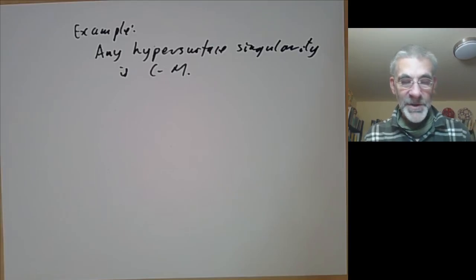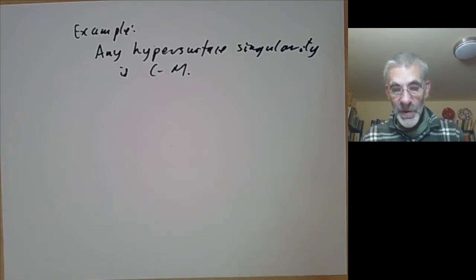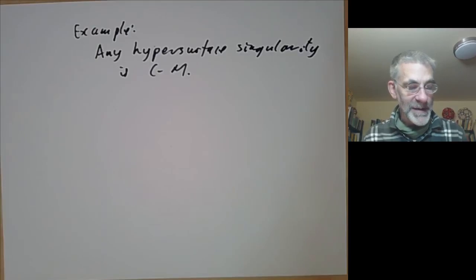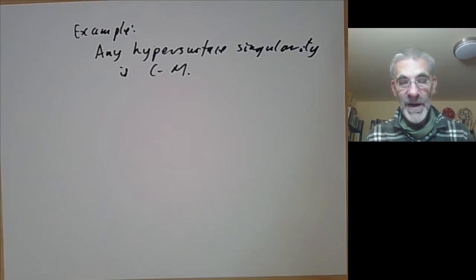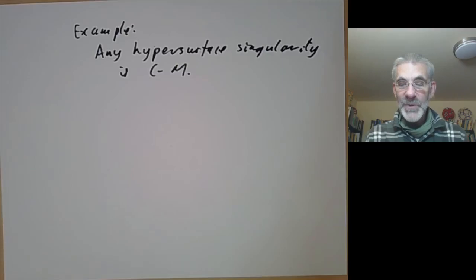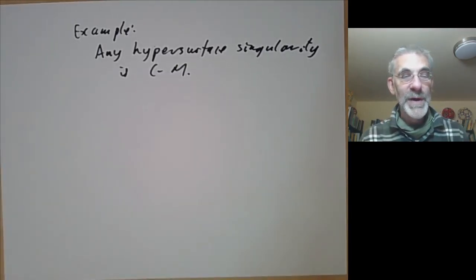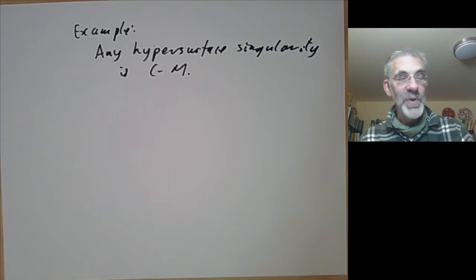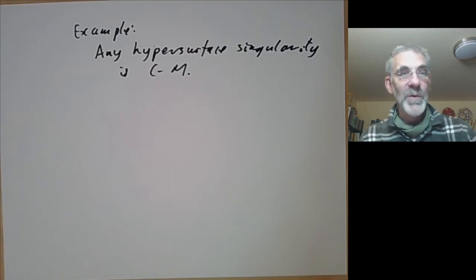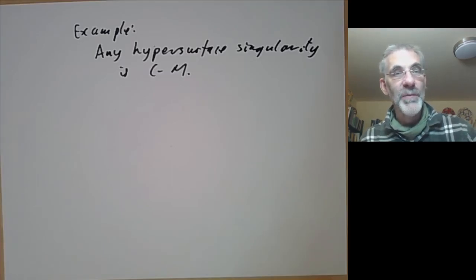In the next lecture we're going to talk about something you can construct out of a regular sequence called the Koszul complex, and as one application we will show that if you have a regular sequence for a Noetherian local ring then any permutation of it is also a regular sequence — which is not at all obvious from the definition.